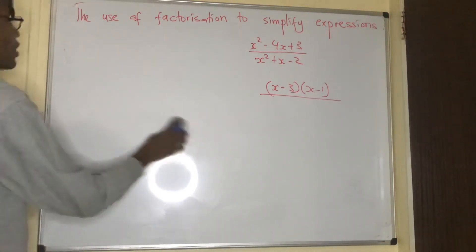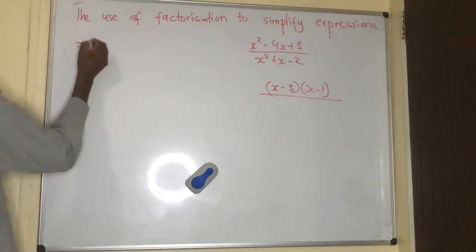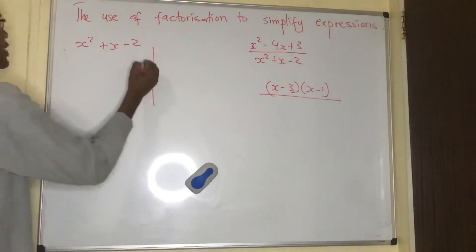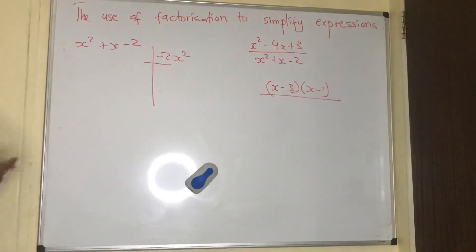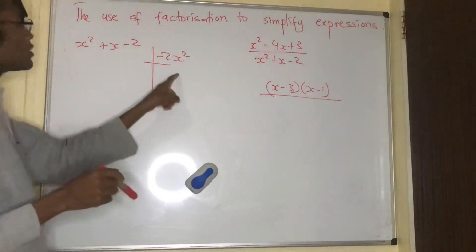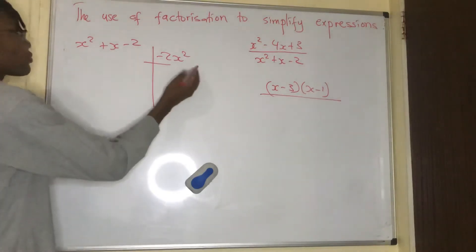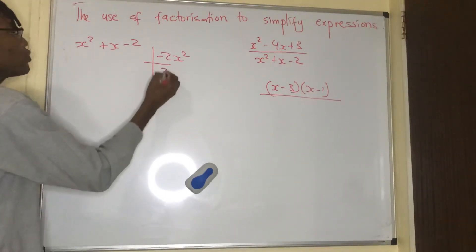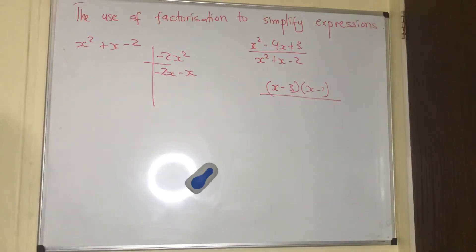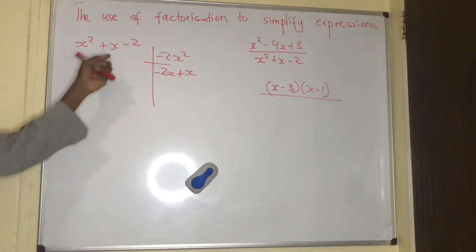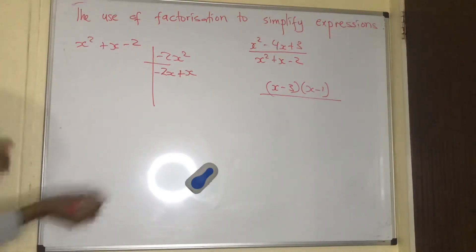I need to find factors here on the bottom part of the fraction. I am going to have x squared plus x minus 2. I multiply x squared with minus 2 to get minus 2x squared. I need factors that when I add them give me plus x and when I multiply them give me minus 2x squared. With minus 2x plus x, it will give me minus 2x squared, but it's not giving me plus x, so that one is out.